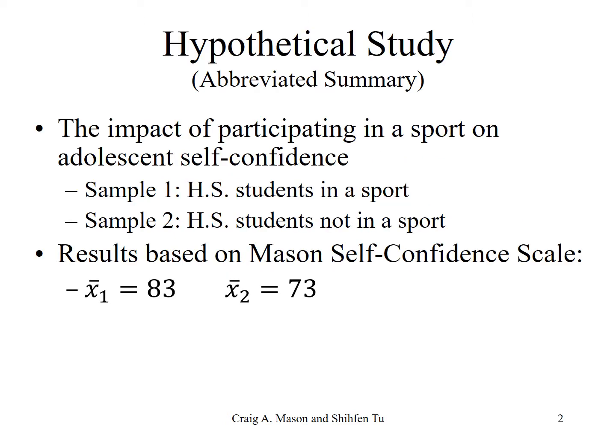Let's return to our hypothetical example looking at sports involvement and self-confidence in high school students. Students involved in sports had a mean of 83 on the Mason self-confidence scale, and those not involved in sports had a mean of 73. The pooled standard deviation was 20. We're just calculating the effect size, not going through the entire set of calculations and hypothesis testing.